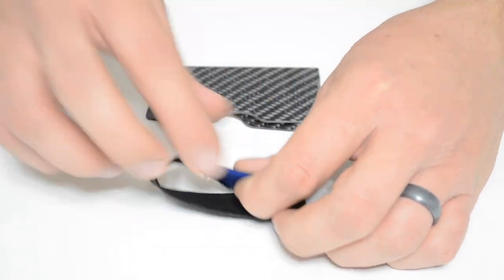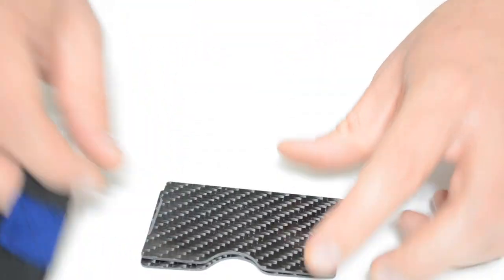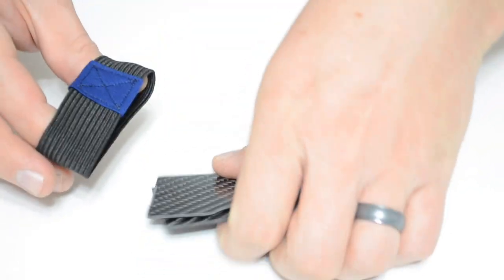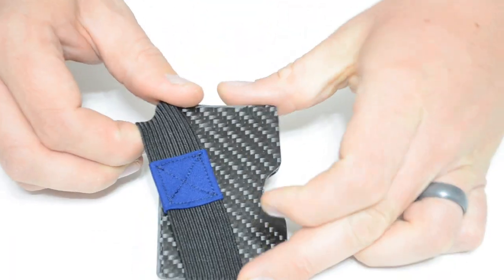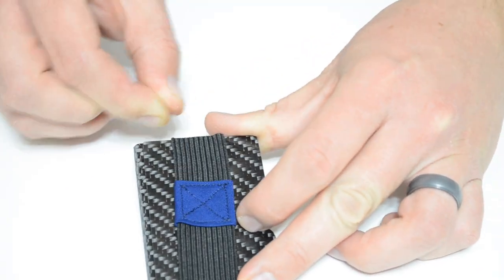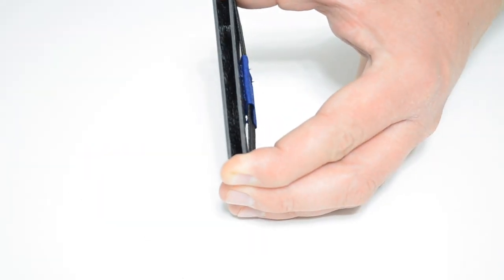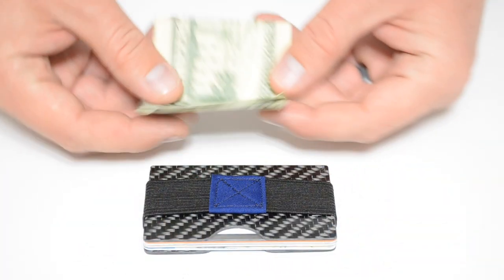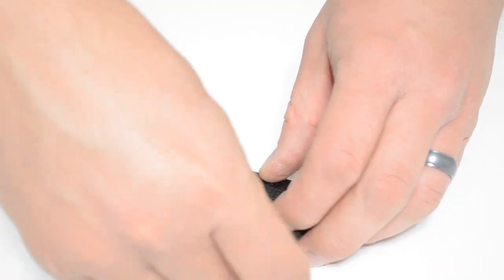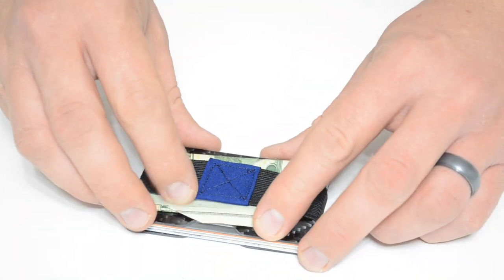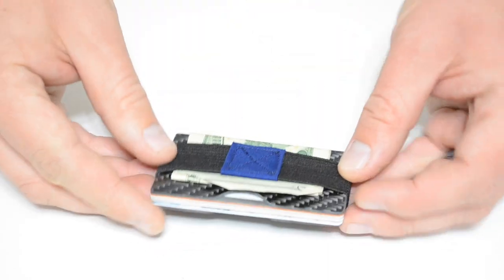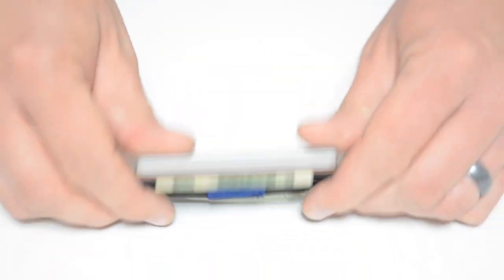Now we can assemble the wallet. With the bevels we made on the inside of each of the plates, it makes it easy to pull the plates apart and stick all of your cards in. If you want to carry cash, fold it over and tuck it underneath the strap. The strap holds it securely so it doesn't fall out.